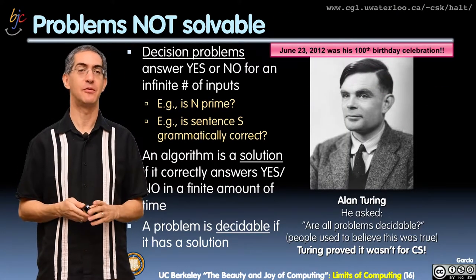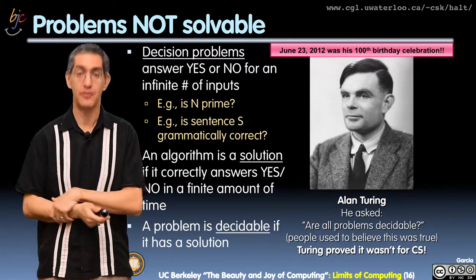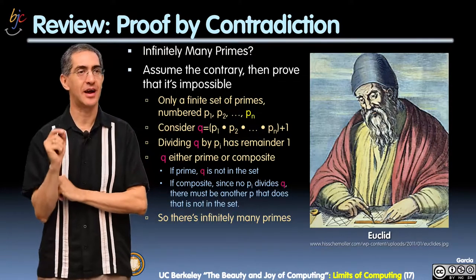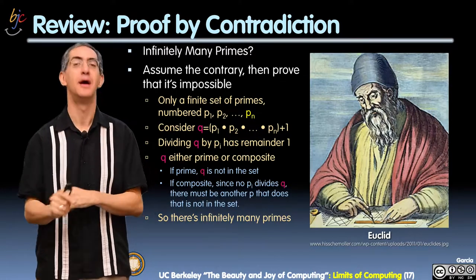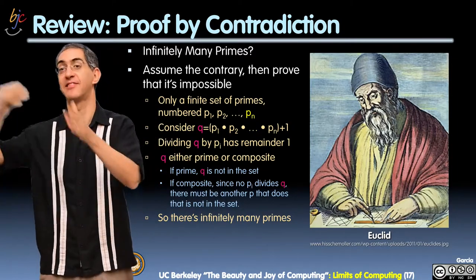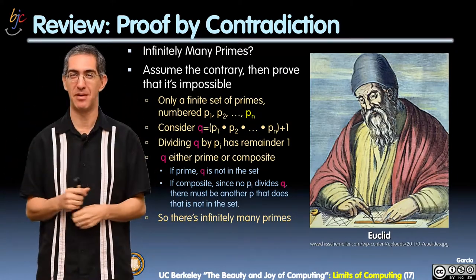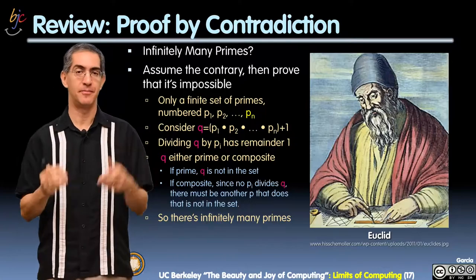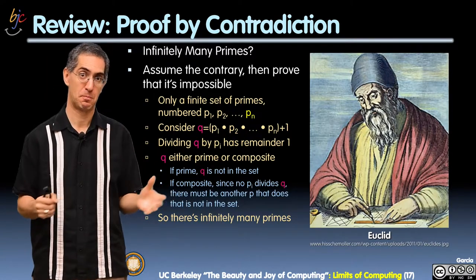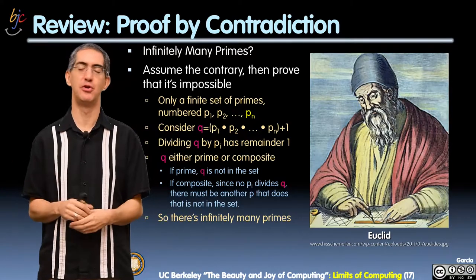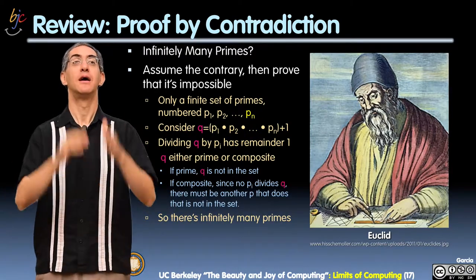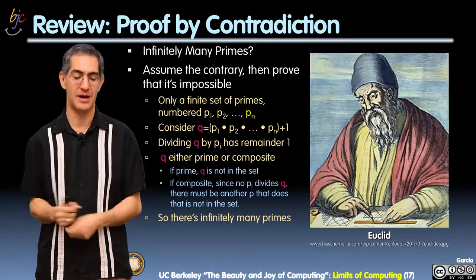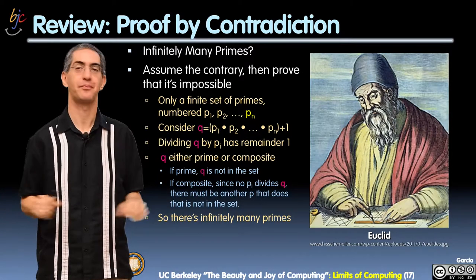By the way, he recently would have celebrated his 100th birthday a few years ago. So I'm going to review a mathematics concept you may or may not have seen before — it's called proof by contradiction, and you need it for the next slide, which is a really meaty, brain-busting slide. I want to ask a question: do I have an infinite number of primes? This is Euclid, who came up with this proof — it's a beautiful, elegant proof. Proof by contradiction is the following: I assume the opposite, the contrary, and I prove it's impossible.